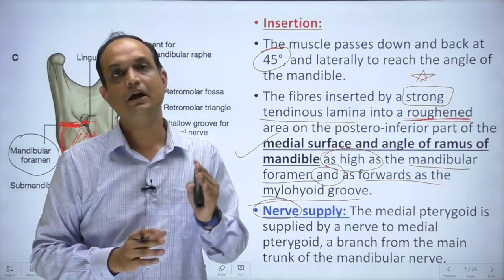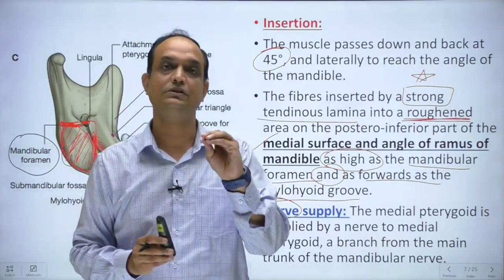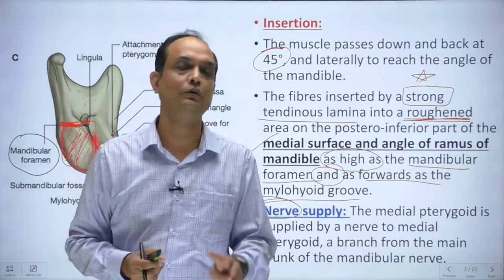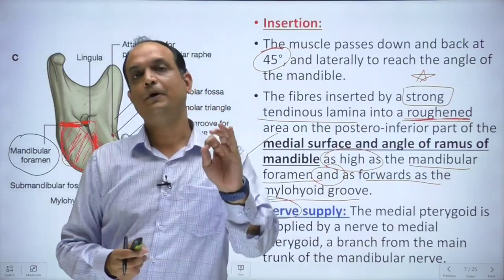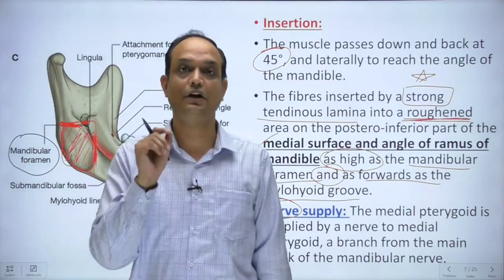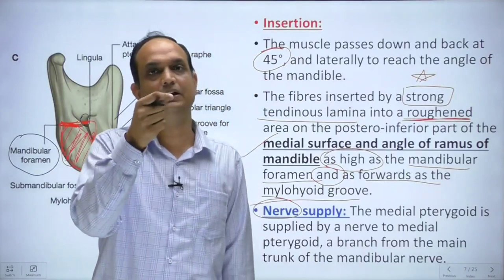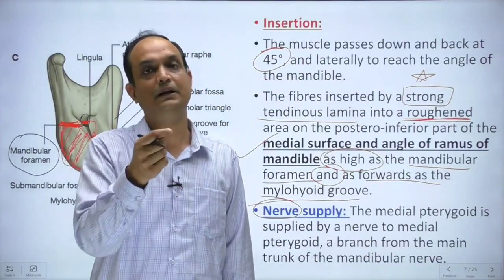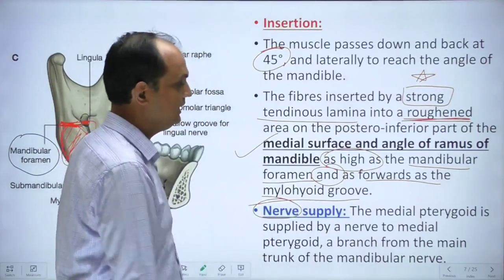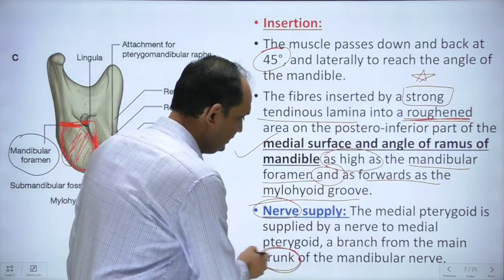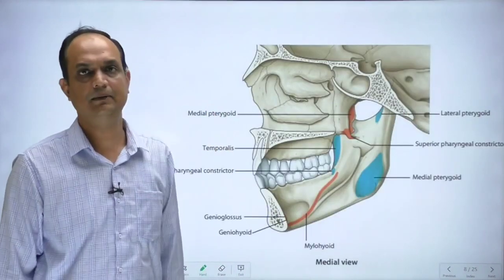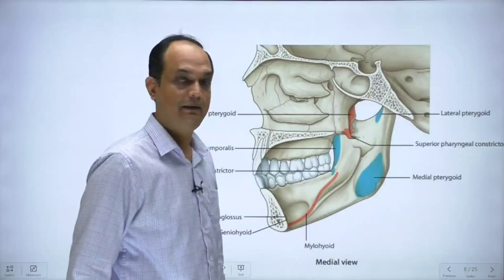All four principal muscles of mastication are supplied by branches of the mandibular nerve, which comes from the first pharyngeal arch. The important point is that the medial pterygoid muscle receives its branch directly from the trunk of the mandibular nerve - not from the anterior or posterior division. This is an important exam question, so remember that the nerve to medial pterygoid is a direct branch of the trunk of the mandibular nerve.